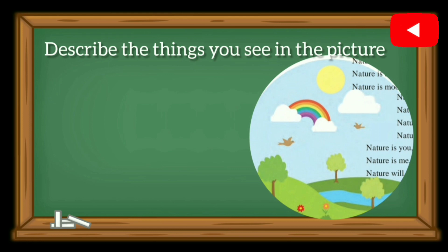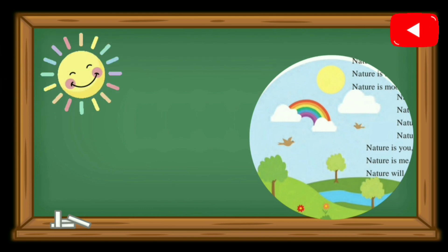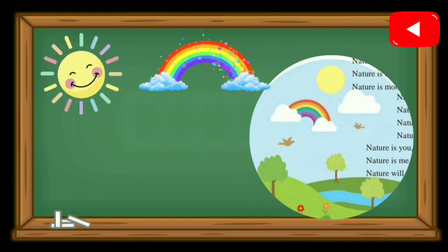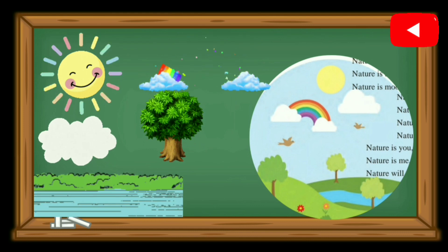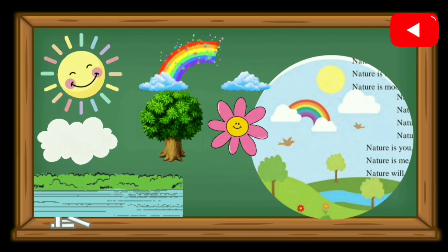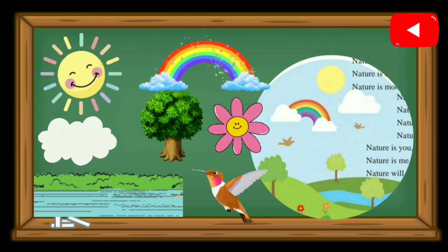Tree. Describe the things you see in the picture. Yes, there is sun, rainbow, cloud, tree, river, flowers and birds.